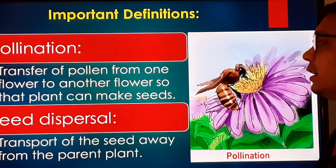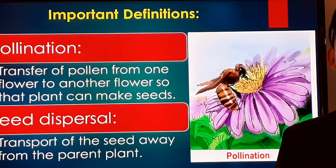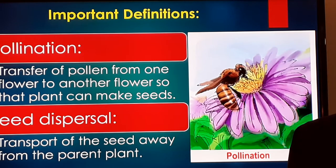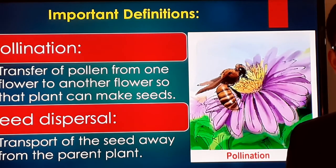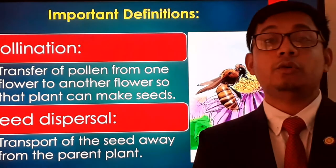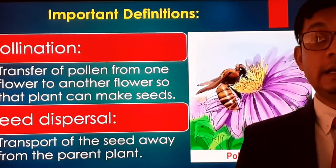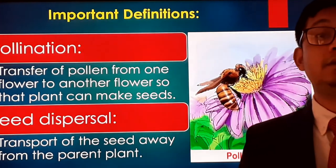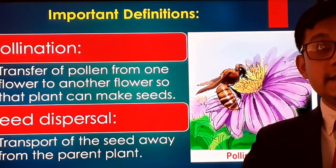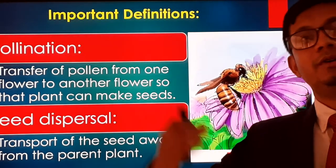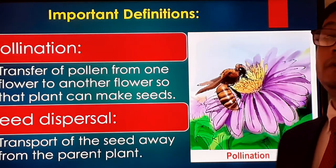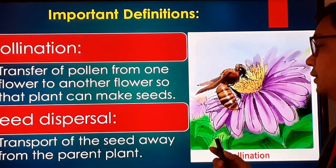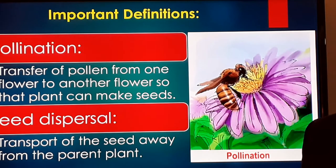Now, seed dispersal: the transfer of seeds away from the parent plant is known as seed dispersal. The parent plant is the plant from which the seeds originate and get dispersed to another place. So, dear learners, there are two very important definitions: pollination and seed dispersal.